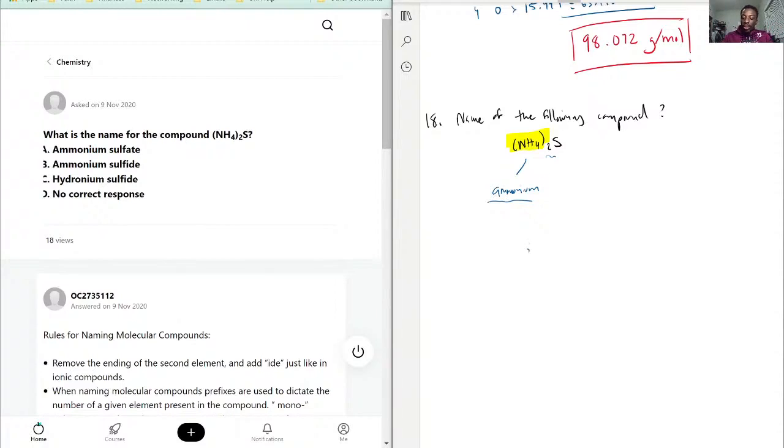Right now we have ammonium. Now, this is known as sulfur, that's sulfur. But as we will say, you don't just put sulfur down here. You need to be able to change the ending to where you have the I, D, E.